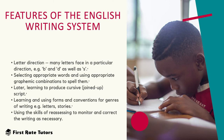Another important feature is letter directionality — many letters face a particular direction, for instance B and D as well as S. The more children practise, the more they learn the correct letter directionality. Children also learn how to select appropriate words and use appropriate graphemic combinations to spell them. Later they start learning how to produce cursive — joined up writing — as well as learning forms and conventions for genres of writing, such as what to write in a letter versus a story. They also learn how to use skills of self-assessment to monitor and correct their writing.